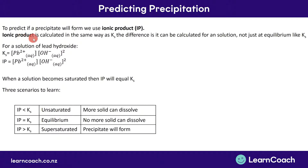The difference is, Ks tells you how many of a pair of ions need to be present to cause a solution to be saturated. The ionic product is the exact same thing, except it can be written for any solution, regardless of whether that solution is unsaturated, saturated, or supersaturated.